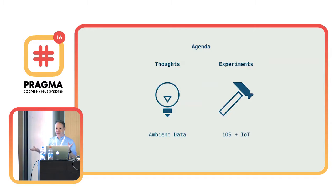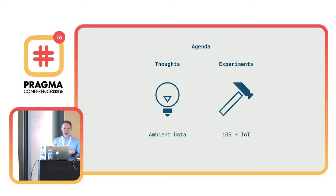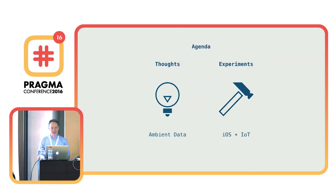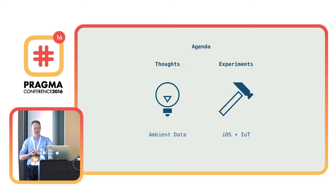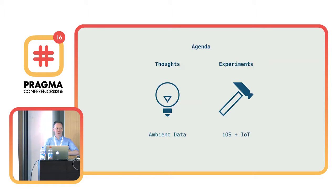The agenda is really in two parts. The first part is going to be about thoughts on what ambient data is and what it means to me. The second part is going to be some experiments where we're looking at iOS working with the Internet of Things. Can I just ask quickly how many of you have been playing with the Internet of Things? How many of you have been playing with location-awareness devices like iBeacons? How many of you are interested in this stuff?